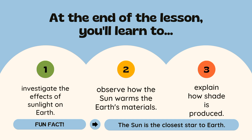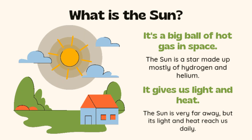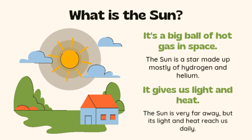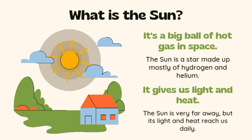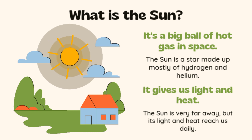Fun fact: the sun is the closest star to earth. What is the sun? It's a big ball of hot gas in space, made up mostly of hydrogen and helium. It gives us light and heat. The sun is very far away, but its light and heat reach us daily.